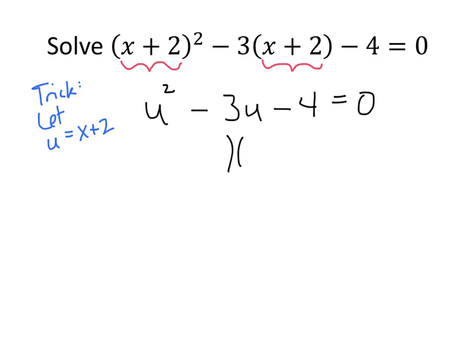In fact, it's a pretty simple quadratic. We can factor it. We're looking for two numbers that multiply together to be negative 4 and add together to be negative 3. Doesn't take us too long to figure out that that's negative 4 and positive 1. So that means that our solutions are u equals 4 and u equals negative 1.